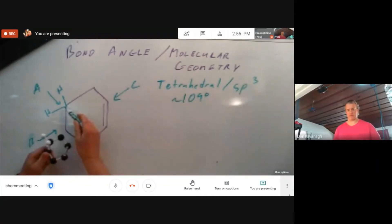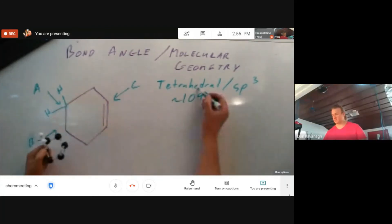So that is the geometry, bond angle, and orbital hybridization of carbon A. Let's do the same thing for carbon B now. Let's put some hydrogens on carbon B.